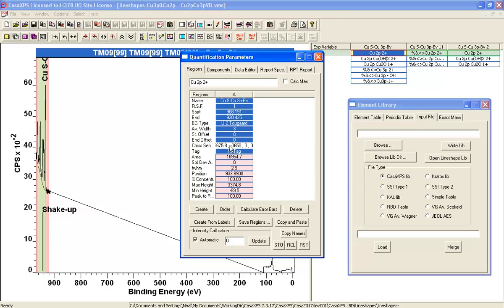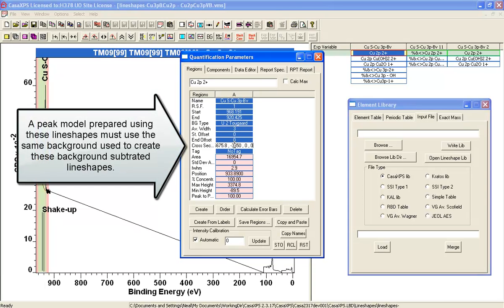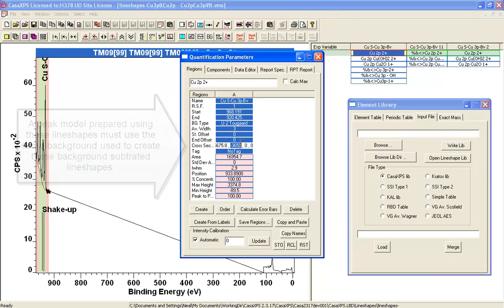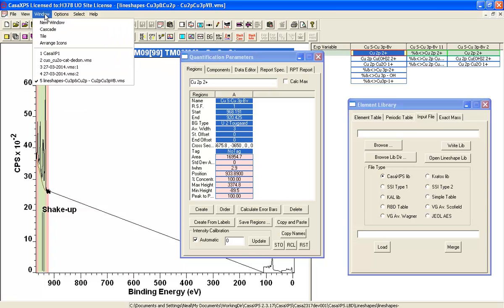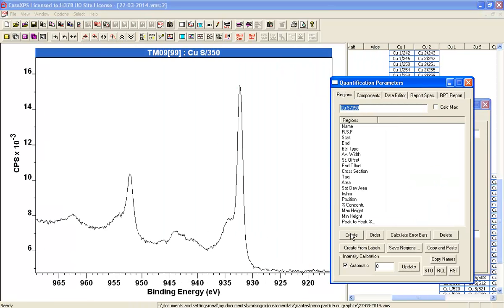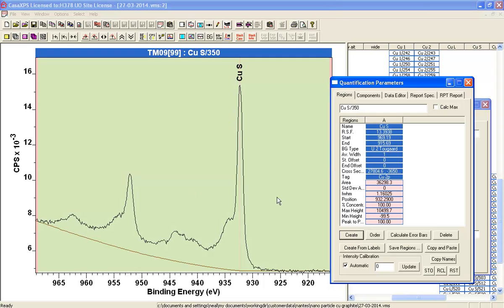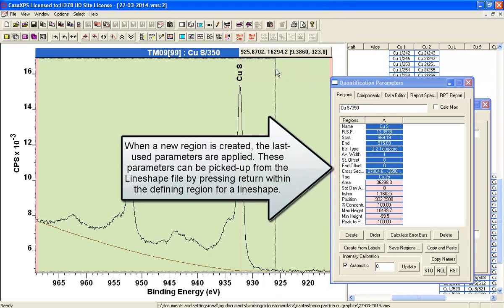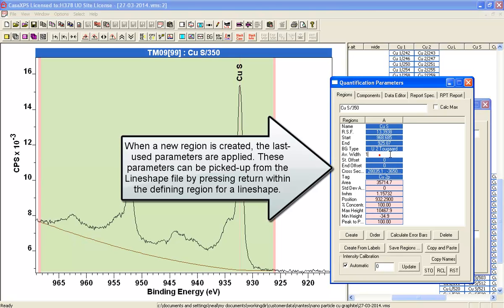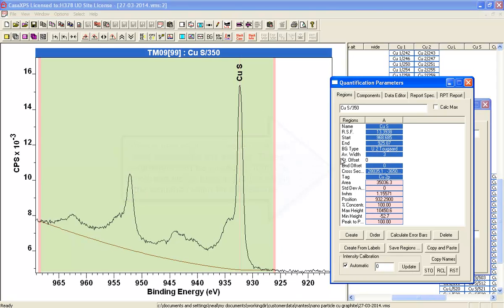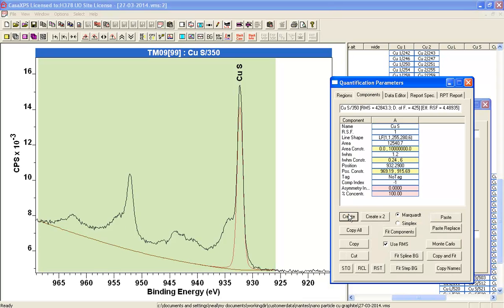So the first thing we need to do is understand what background was used for these data. And the background is a U2 Tougaard background, and the parameter that is important to a U2 Tougaard background is this one here. So I need to make sure I'm using the same when I create a peak model for the data that I want to analyze. So I create a background. Let's give it a little bit more stability. And what we can do is create a peak model based on these line shapes.